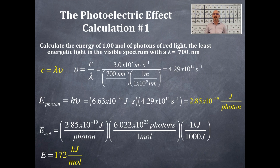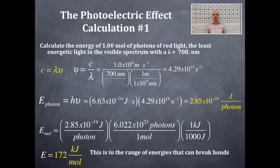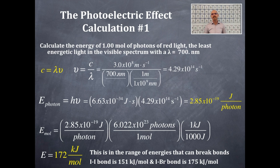The energy in kilojoules per mole is 172 kJ/mol. This is in the range of energies that can break bonds — specifically weak bonds. An iodine-iodine bond is about 151 kJ/mol, and an iodine-bromine bond is about 175 kJ/mol. These atoms are large, relatively far apart, and the bonds are not particularly strong — which is why red light is the lowest energy wavelength in the visible region of the electromagnetic spectrum.